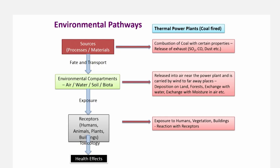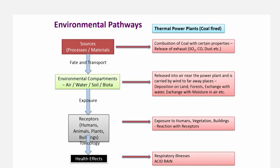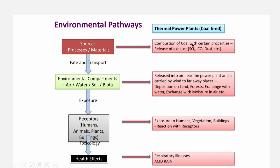When it comes into the environment, you can get exposed directly as a human being through air or through vegetation, or it can react with buildings. There are instances where several monumental buildings have had damage. One of the more common effects seen here are respiratory in nature for this particular source. There is also another big category of effects which is acid rain, which came into prominence because of the acidic nature of rainwater due to interaction between pollutants SO2 and water vapor droplets in the atmosphere, pertaining to the chemistry of sulfur oxides with water and the pH of rainwater.